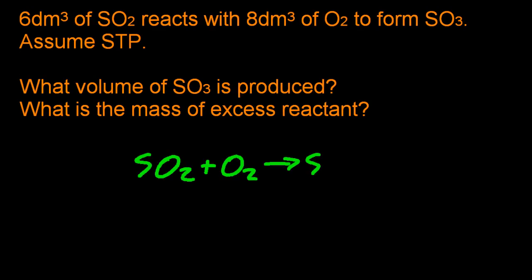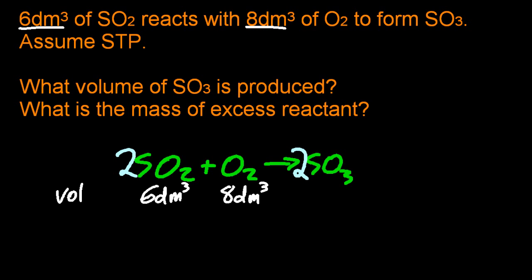This is the contact process used to make sulfur trioxide that makes sulfuric acid. You need to learn this. Let me put the values in. Six decimeters cubed of sulfur dioxide and eight decimeters cubed of oxygen. To find the volume of SO3, you might be tempted to just add them up. That's wrong. Avogadro's law says you can't do that. This is excess and limiting as well. Which is the excess and which is the limiting? Six over two and eight over one. Which is the lowest number? Six over two is lower. So that's the limiting reagent.